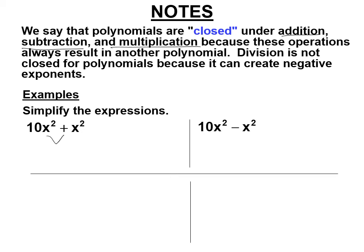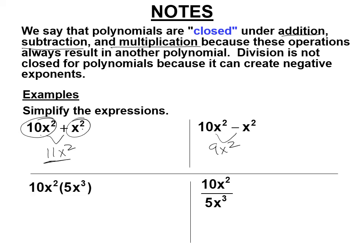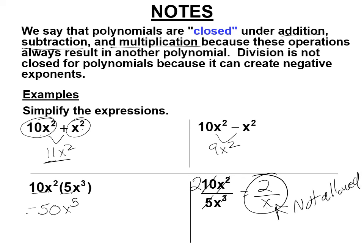Let's simplify by adding: that's a monomial plus another monomial, giving 11x squared — so adding two monomials gives another monomial, another polynomial. If you subtract two polynomials, you always get another polynomial. When we multiply 10x squared times 5x cubed, we get 50x to the fifth — multiply two monomials and get another polynomial. But when you divide, you get 2 over x, and you're not allowed to have x in the denominator in polynomials. So division is not closed for polynomials.